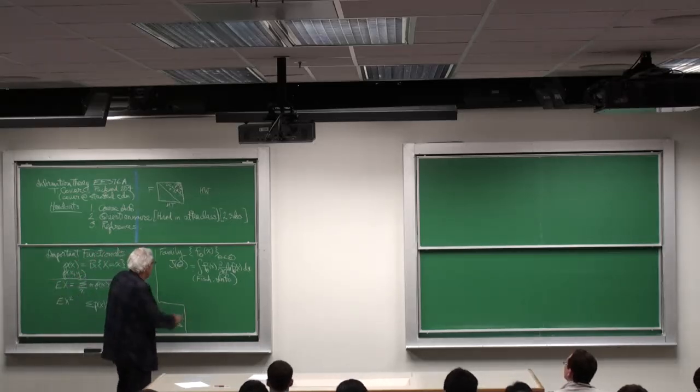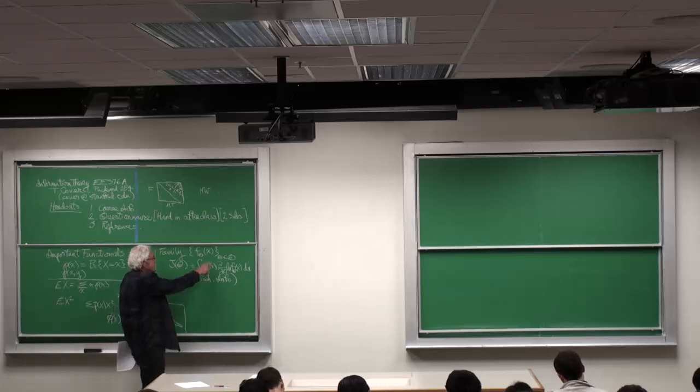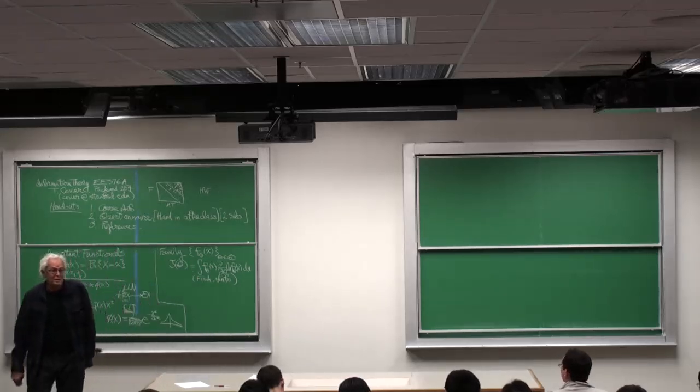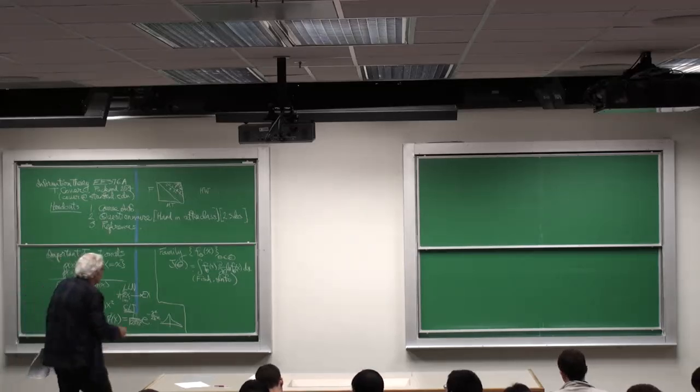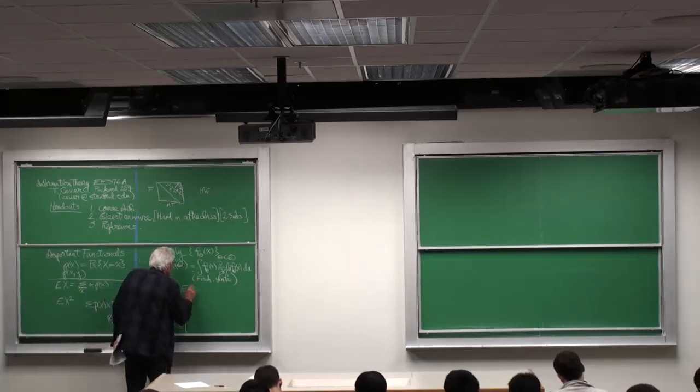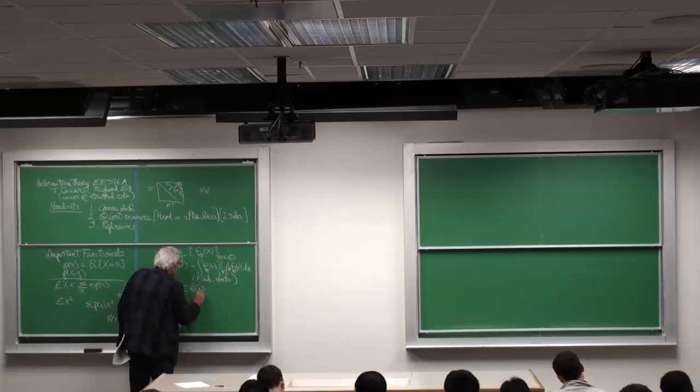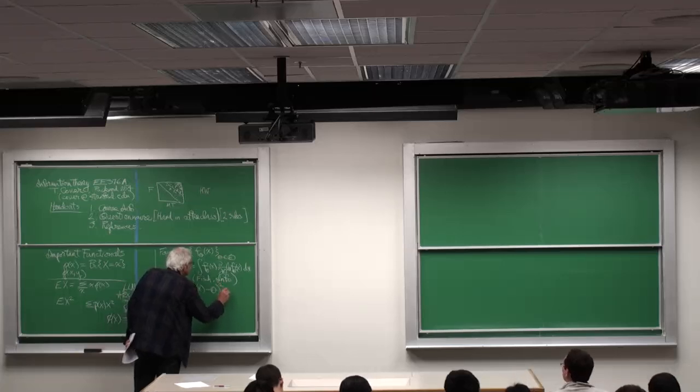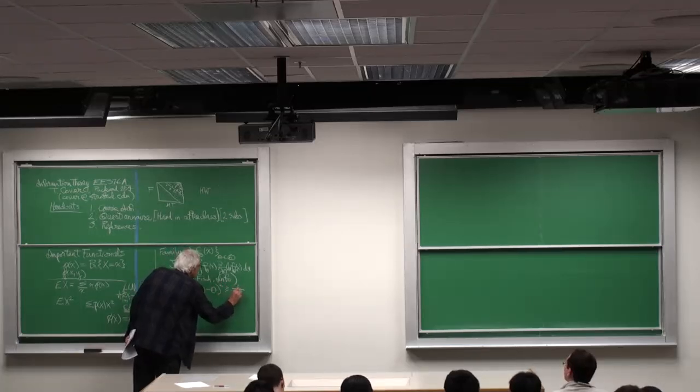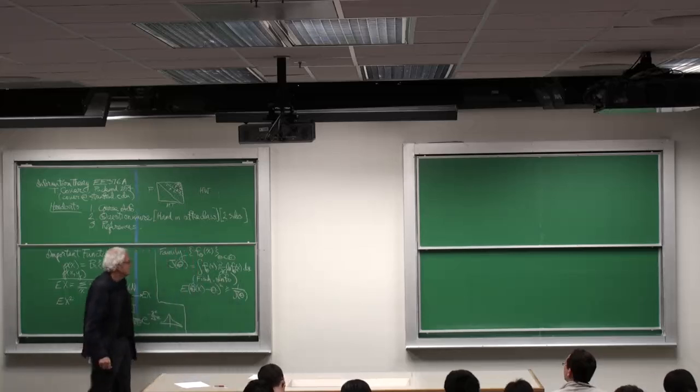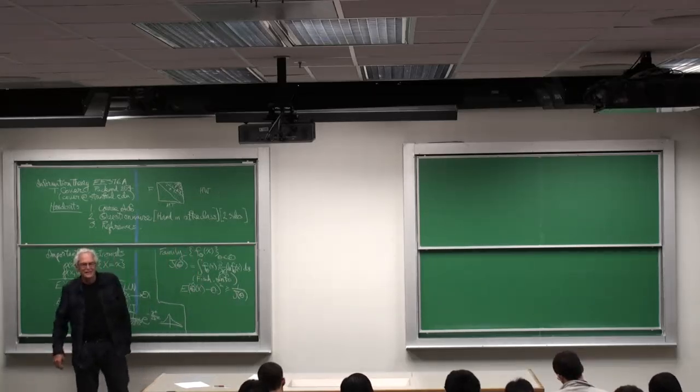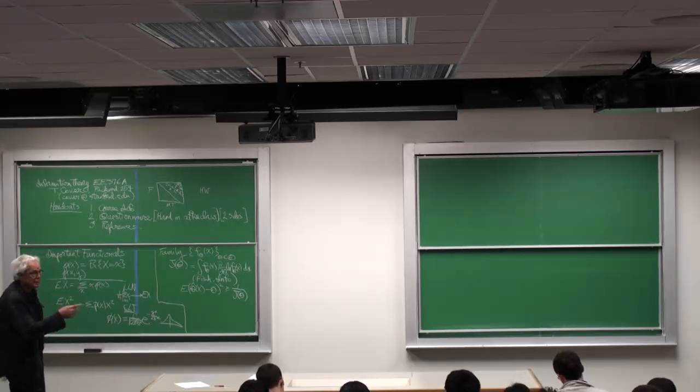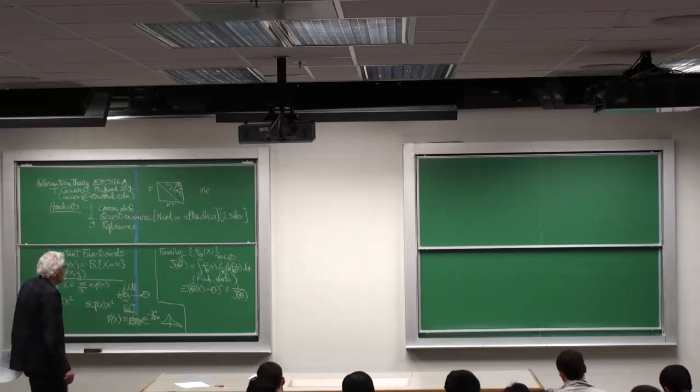And there's an important result that says if you have an unbiased estimator for theta, then expected squared error in your distinguishability is greater than 1 over the Fisher information. It's known as the Cramer-Rao inequality. And it's achieved with equality when you have the Gaussian distributions with unknown mean, for example.